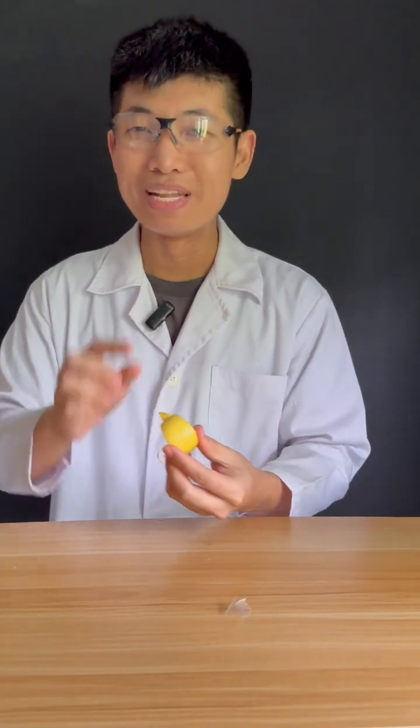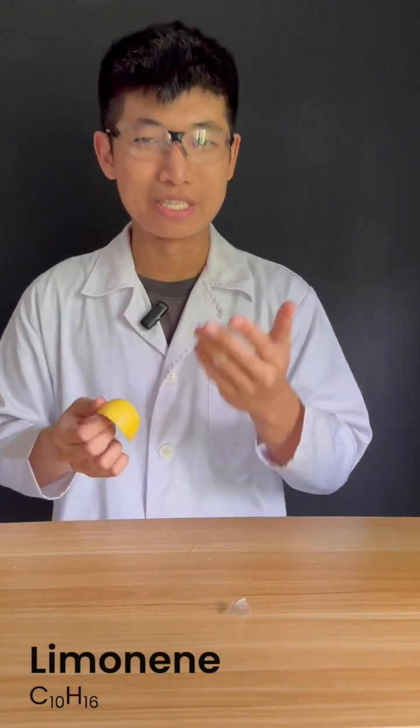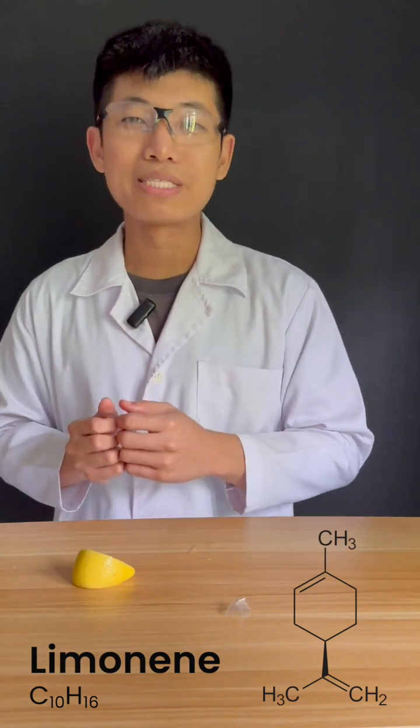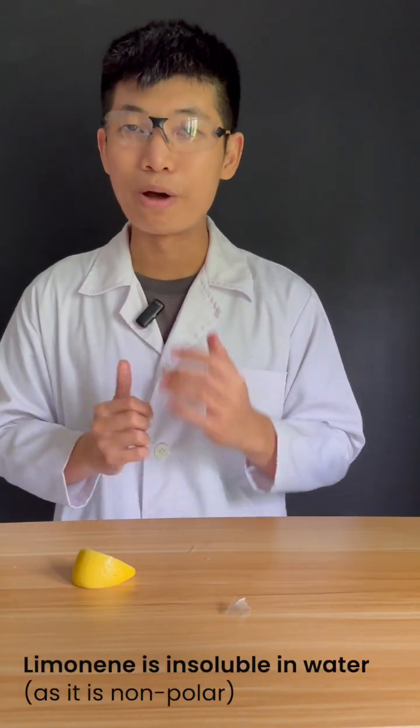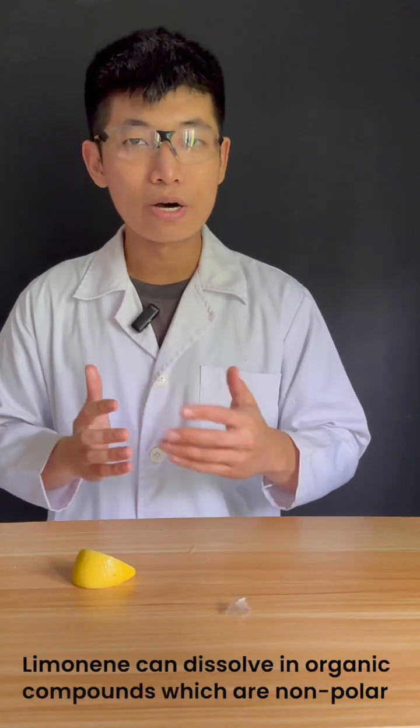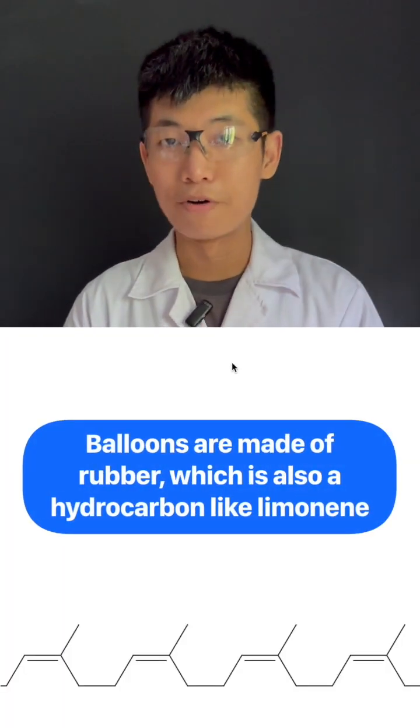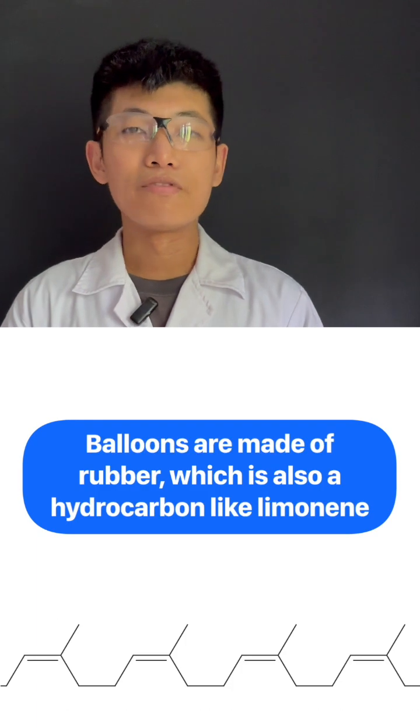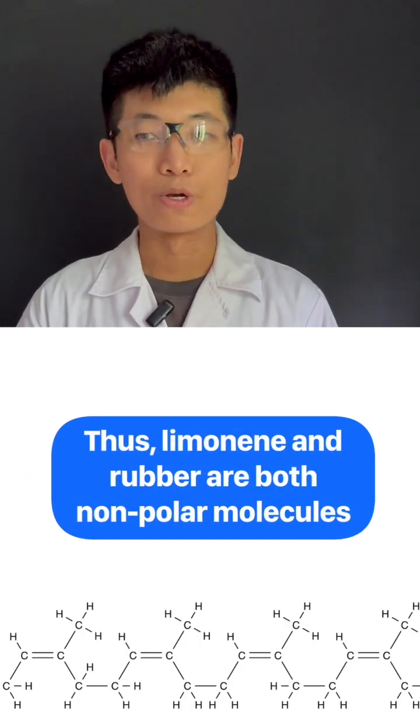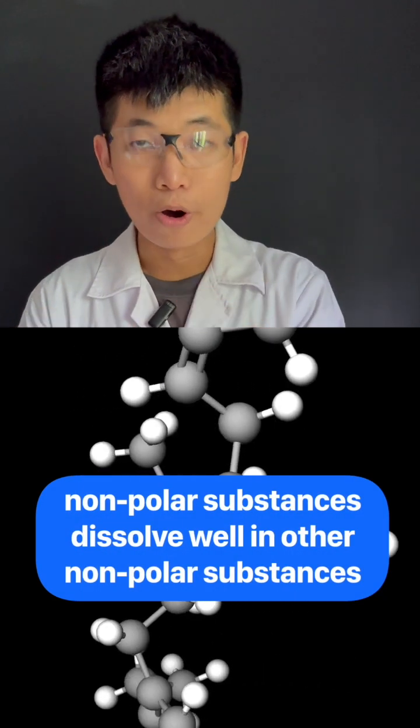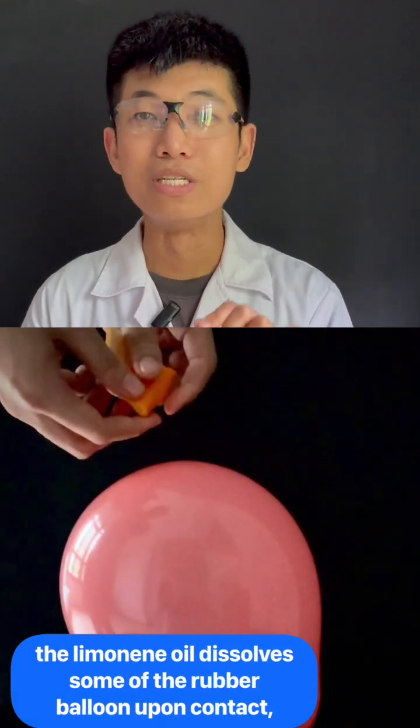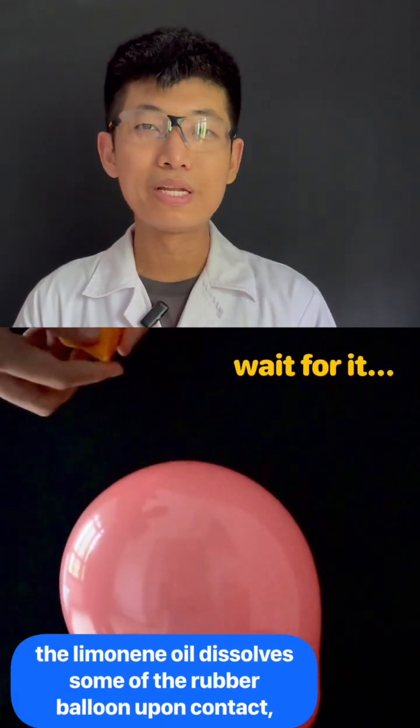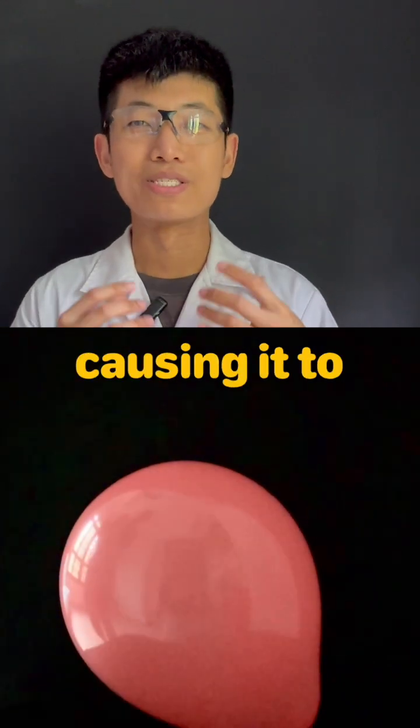What happens is when you squeeze the lemon, it releases limonene which is a hydrocarbon. Hydrocarbons are not very soluble in water. In fact, they dissolve well in organic solvents or other organic compounds. Balloons are made of rubber and rubber itself is also an organic molecule. The oils or the limonene in the lemon actually help to dissolve the rubber in the balloon, making a hole in it that causes it to burst.